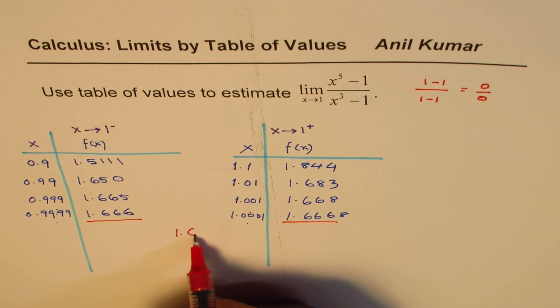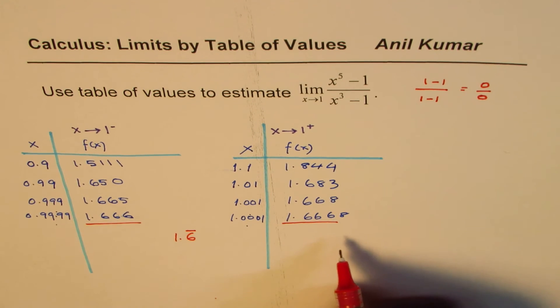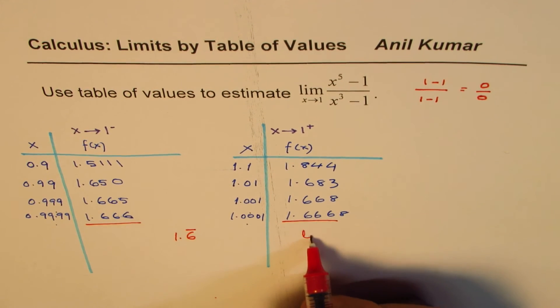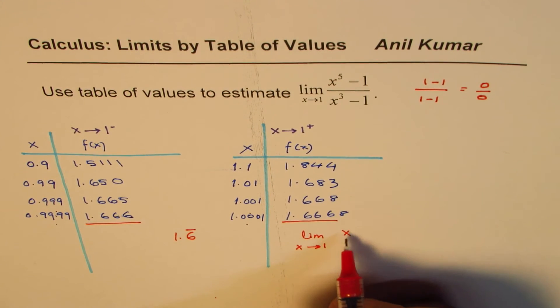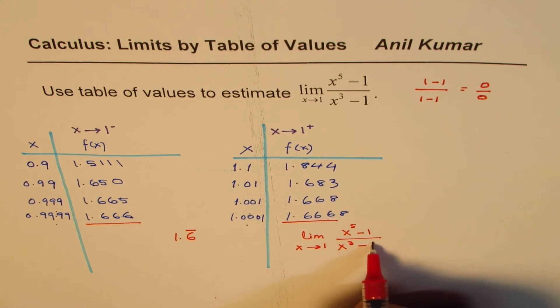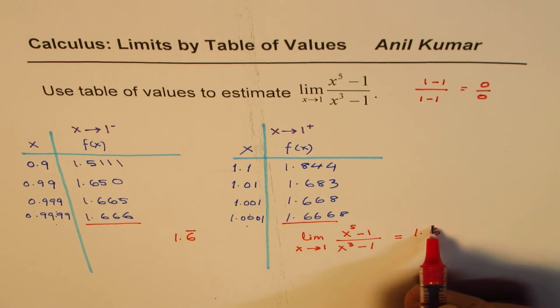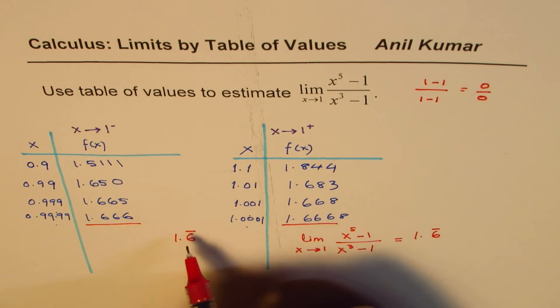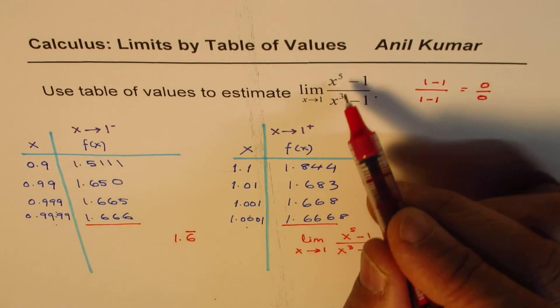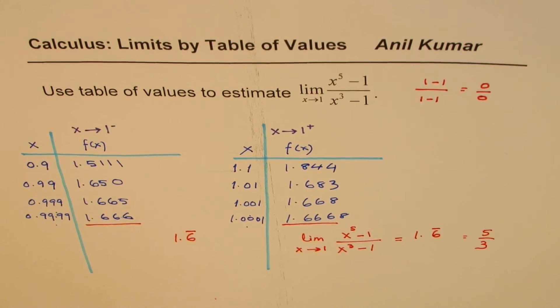So what you notice here is that from both sides we approach a value 1.666. That is, we approach 1.6 recurring. This is what we approach. And therefore, we say that the limit for this function as x approaches 1 for x to the power of 5 minus 1 over x cube minus 1 is equal to 1.6 recurring. You will find this exact value if you convert to fractions, it will be 5 over 3.